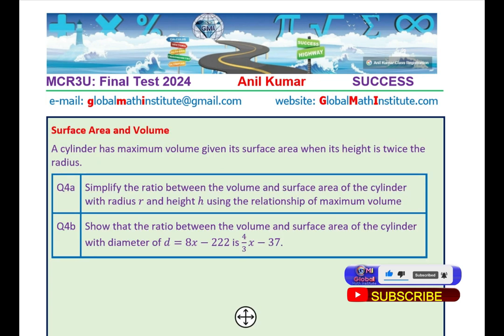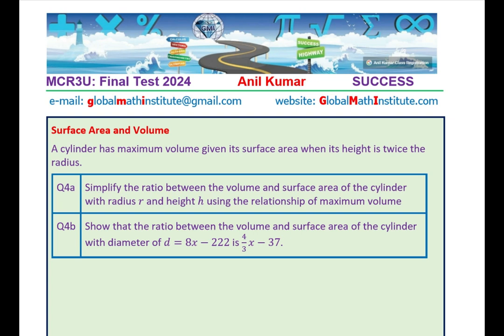Now, we will move on to the next chapter where we work with surface area and volume. The algebraic skills will be further tested. This is an application question, slightly challenging. A cylinder has maximum volume given its surface area when its height is twice the radius. Very complicated statement to understand. I would like you to read this statement properly and then answer part A. Part B is simplify the ratio between the volume and surface area of the cylinder with radius r and height h using the relationship of maximum volume.